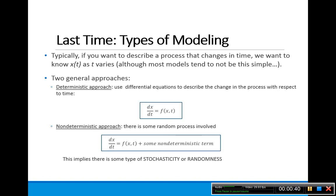We had two different types of models. The first general approach was a deterministic approach, where dx/dt equals some function f of x and t. This model is built based upon whatever processes we think are necessary to include. The non-deterministic approach takes this deterministic approach but adds some kind of non-deterministic terms, giving us stochasticity or randomness.